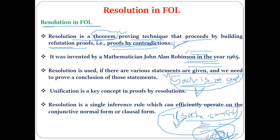If this negated statement reaches a conclusion of nil, that is the meaning of proof by contradiction — automatically, Sachin is an intelligent student. That is called proof by contradiction, and this is nothing but the resolution theorem. We will see this with an example.